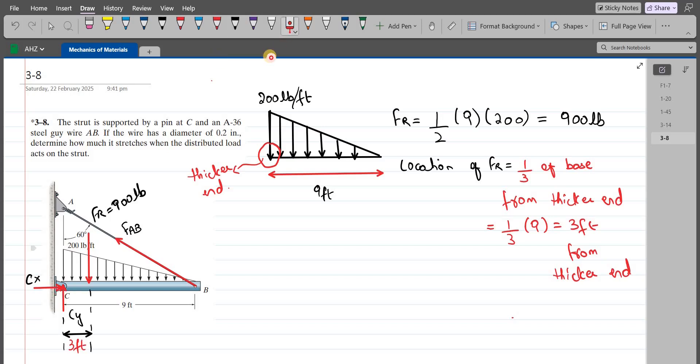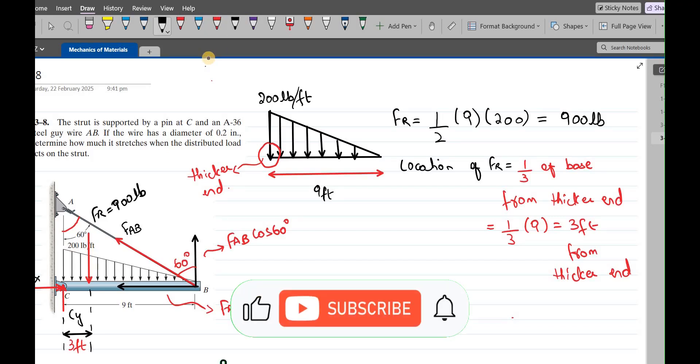Now we have to resolve this FAB force into its components along the X and Y axis. If this angle is 60 degrees, it means that angle is also 60 degrees because they are alternate angles. The vertical component is FAB cos 60, and the horizontal component is FAB sin 60. So this is our free body diagram.